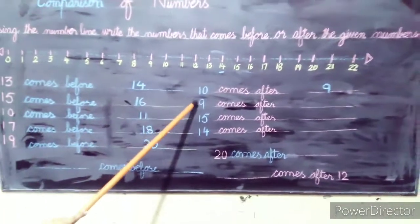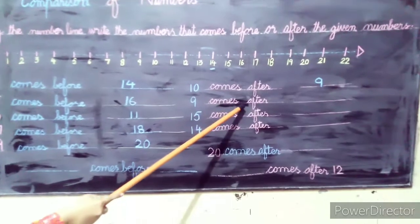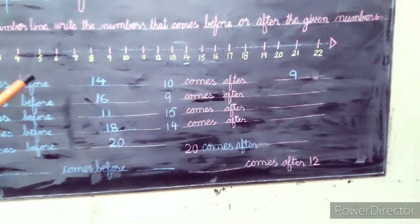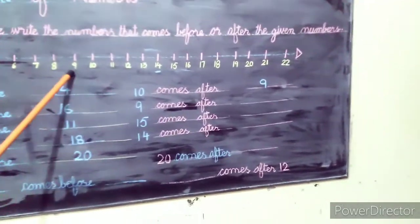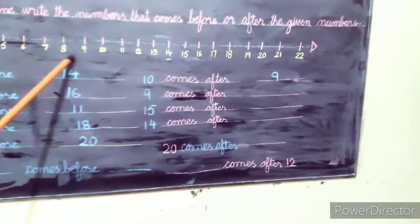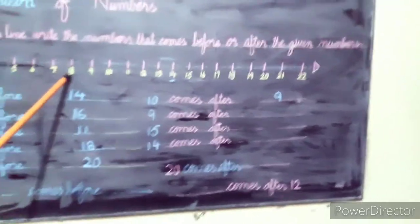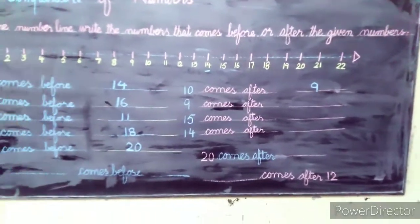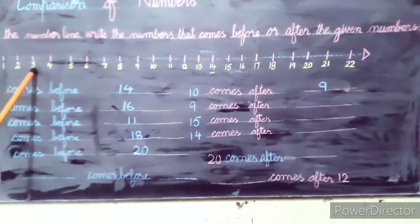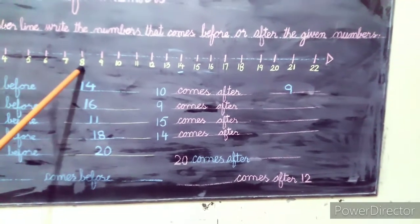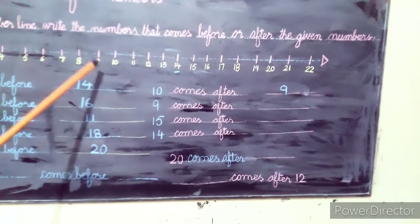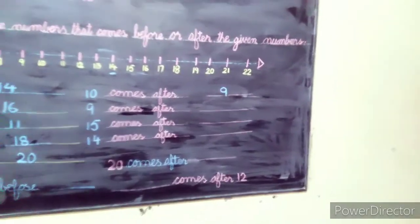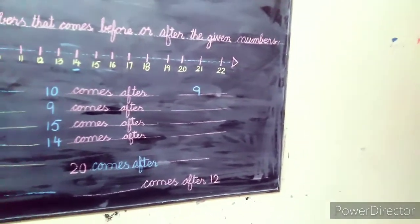Next: 9 comes after. What does 9 come after? Let's count: 0, 1, 2, 3, 4, 5, 6, 7, 8. So 9 comes after 8.